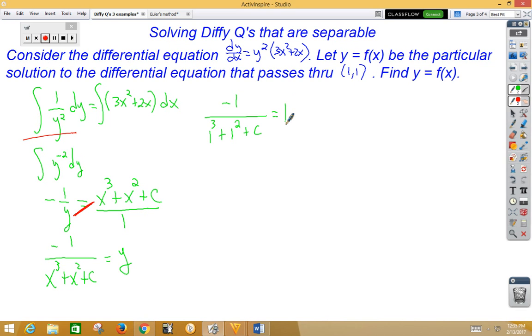And so now I've got -1/(2 + c) = 1. To kill the fraction, I get -1 = 2 + c, so c is -3.